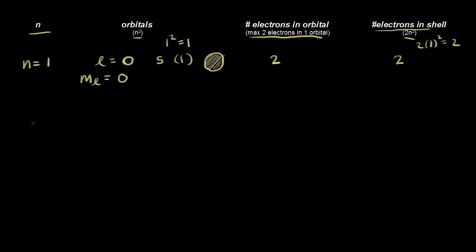Let's move on to the second shell, where n is equal to two. The angular momentum quantum number goes from zero all the way up to n minus one — so from zero to two minus one, which is one. So we have two allowed values for l: zero and one.